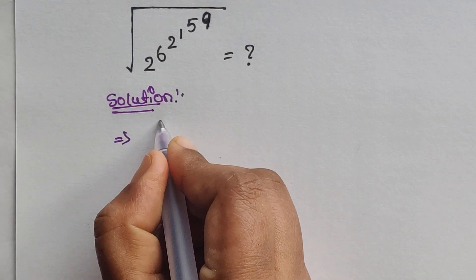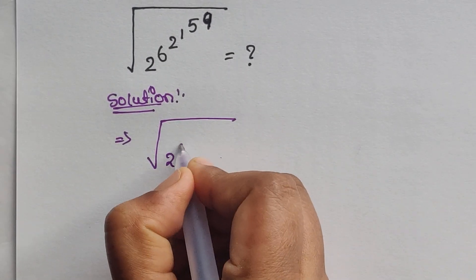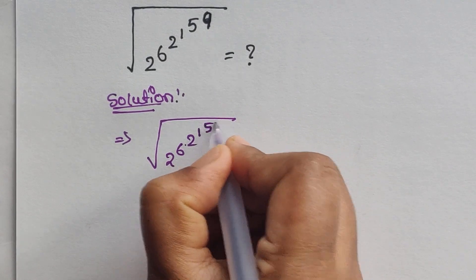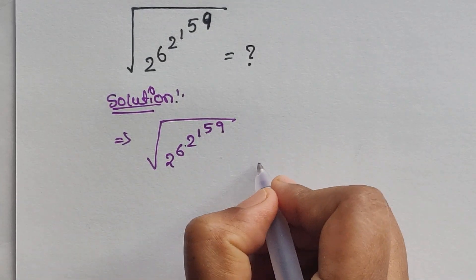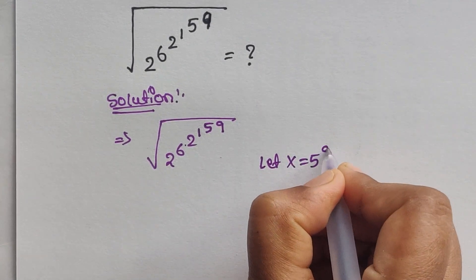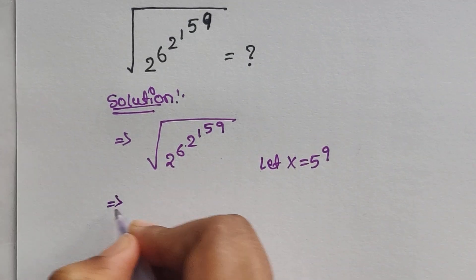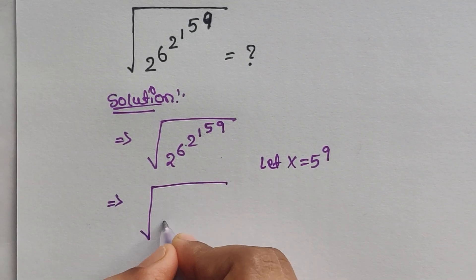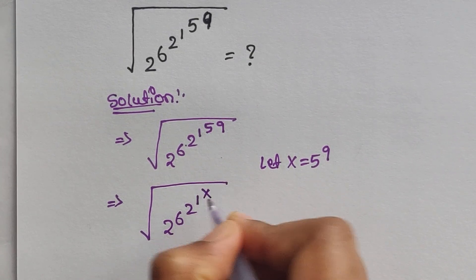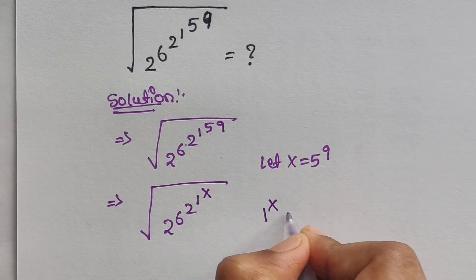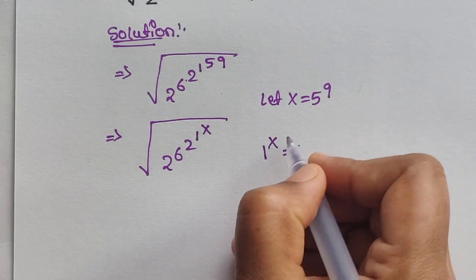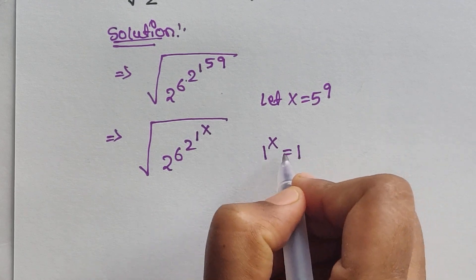Square root of 2^6 · 6^2 · 1^5 · 5^9. Let us consider x equals 5^9. Now it will become square root of 2^6 · 6^2 · 1^x. Since 1 to the power of anything is always equal to 1, we can simplify 1^x to 1.